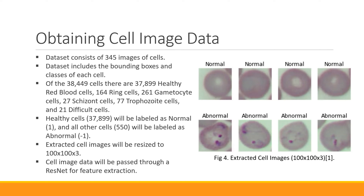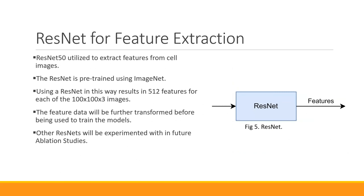We didn't do a formal ablation study on image size, but that was from preliminary testing. For feature extraction we use a common method: a convolutional neural network, specifically ResNet-50, pre-trained on ImageNet. We extracted a total of 512 features for each 100 by 100 by 3 image. These features will be transformed before being passed into the model. In the future we'll be doing an ablation study testing the effects on performance of using different size ResNets.